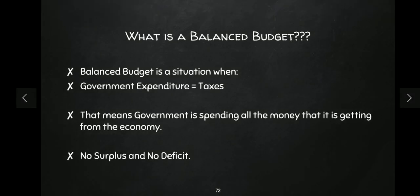What is a budget? In the context of the government, budget is about how much is our expenditure and how much is our income. Government's income comes from taxes and government's expenditure is the amount the government spends on the economy. So balanced budget means that the government's income is equal to the expenditure of the government — that means when taxes are equal to government expenditure. In this situation, there is no surplus and there is no deficit — this is called a balanced budget.